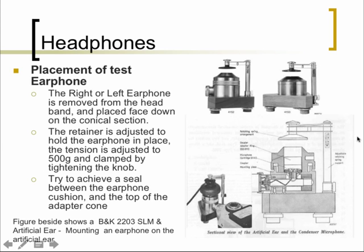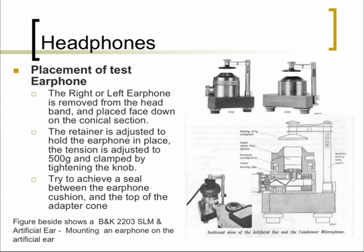For supra-aural earphone calibration, the artificial ear has a tension band with a cavity of approximately 6cc where you place the supra-aural earphone. Each earphone is tested individually — it would be removed from the headband and placed face down on the dome. You would adjust the tension to approximately 500 grams, the standard tension used when placing headphones on ears. Once the tension is set, you connect the base of the artificial ear to the sound level meter with its microphone.